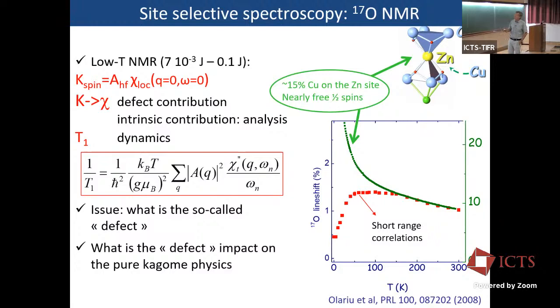So by measuring the shift of your line, it's a spectroscopic measurement. You make splitting of the Zeman, nuclear Zeman levels, and you have a resonance frequency. And this resonance frequency depends on the local field. And the local field is related to the susceptibility in a local way. So that as it's a spectroscopic technique, you can reveal different sites by their different shifts in NMR. And with this, you can reveal that there are some defects, which is not a surprise because of these coppers to the zinc site.